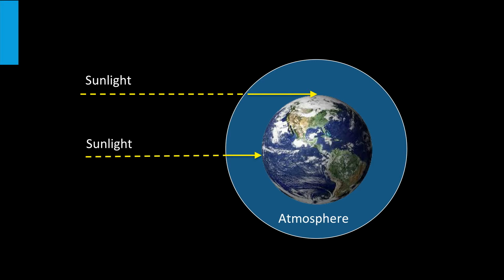As absorption is a loss mechanism, the path length of the light traveling through the atmosphere determines the amount of scatter and absorption losses. At the equator, the light has the smallest path length through the atmosphere. However, at high latitudes the Sun has a larger path length through the atmosphere. As a result, the absorption and scattering losses are higher at high latitudes.